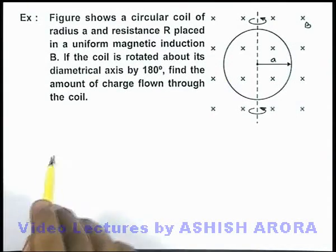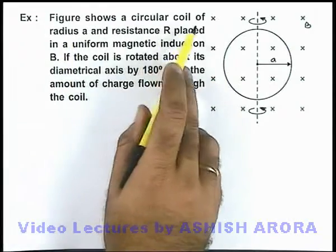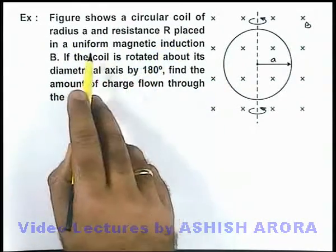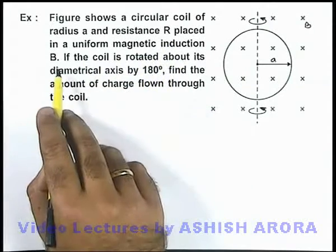In this example, the figure shows a circular coil of radius a and resistance R, placed in a uniform magnetic induction B.